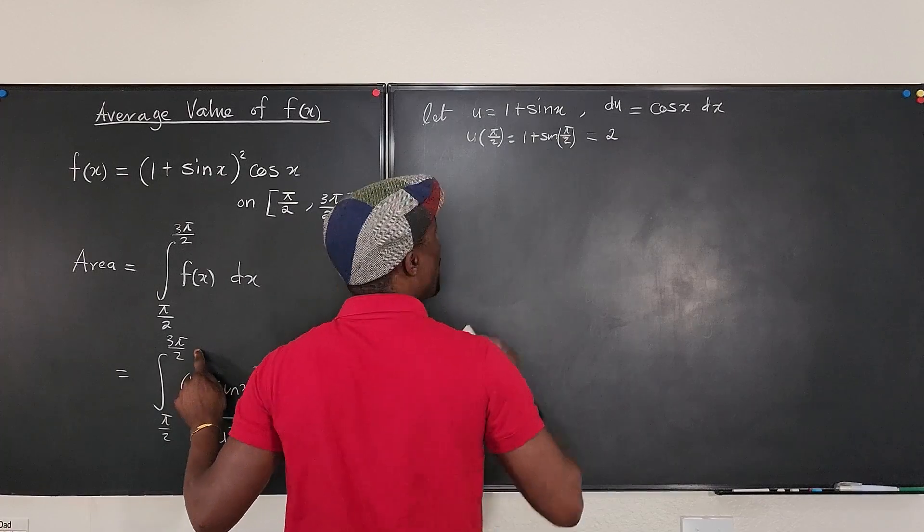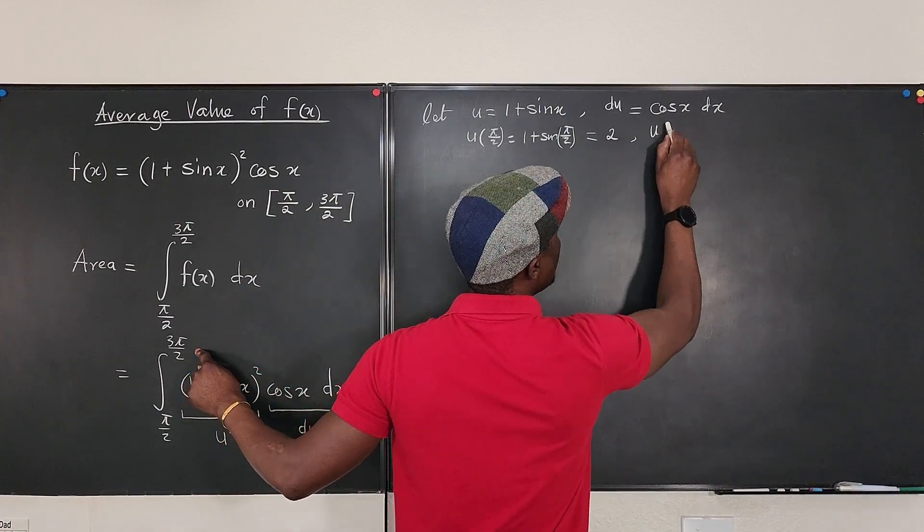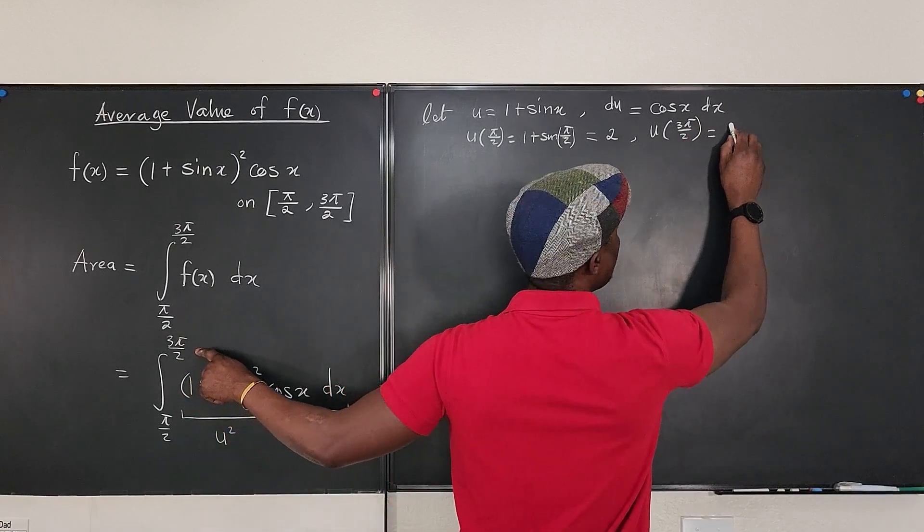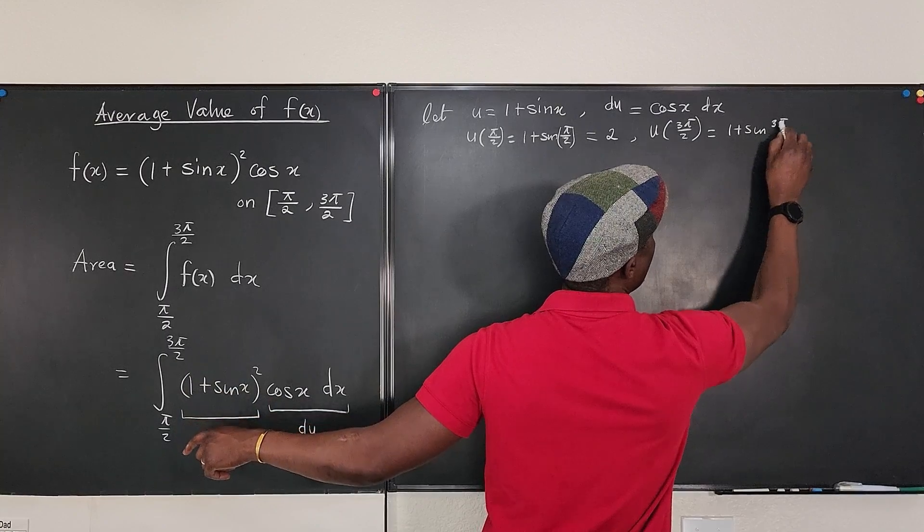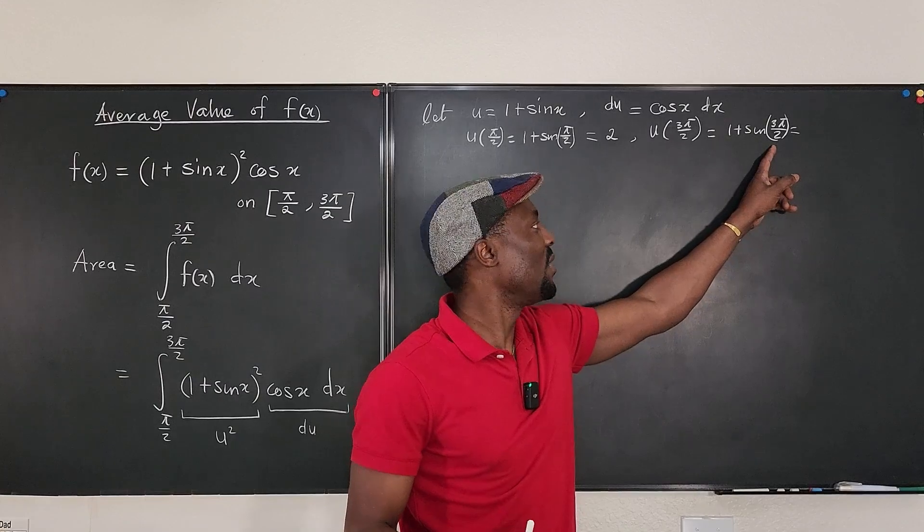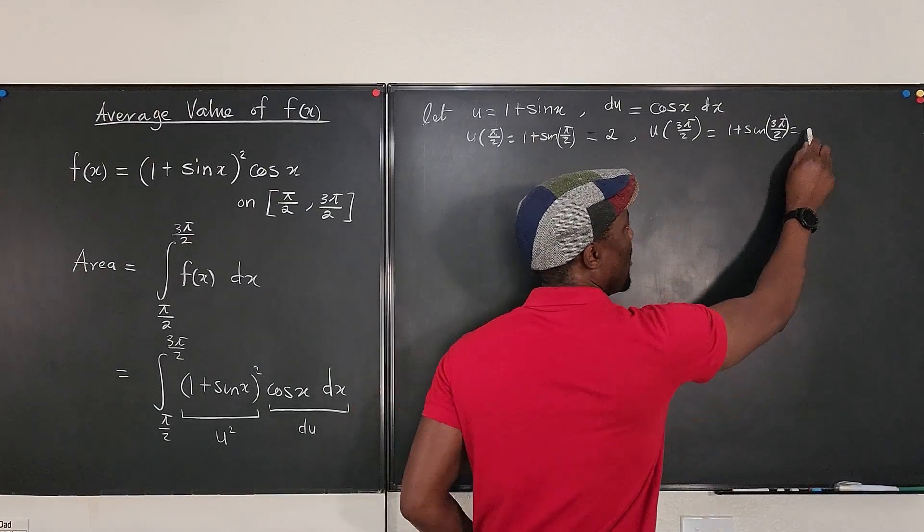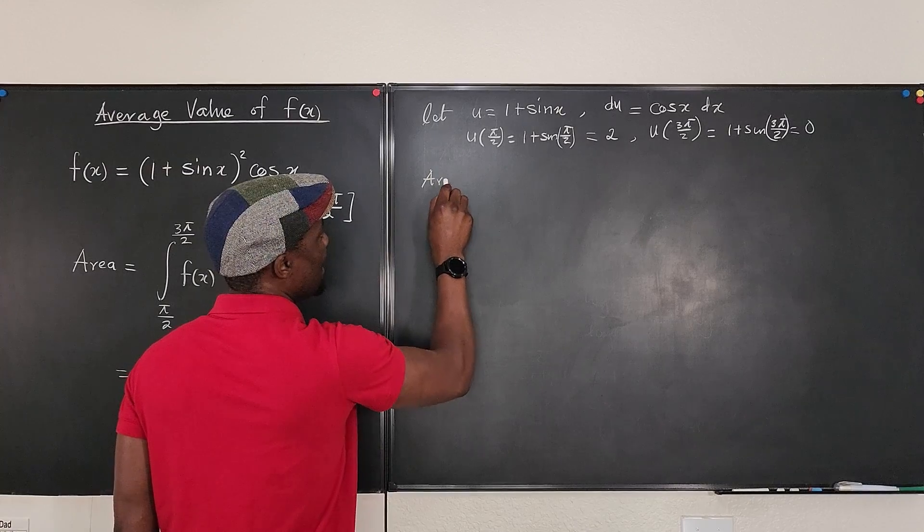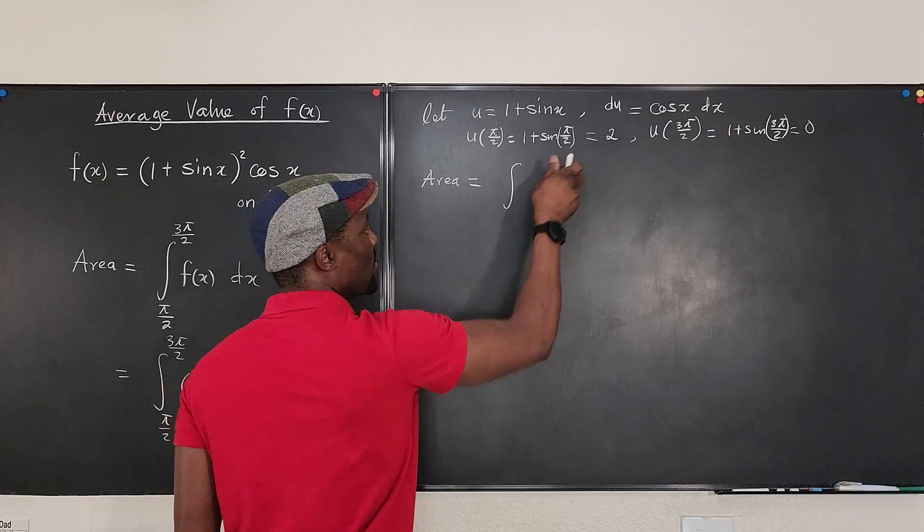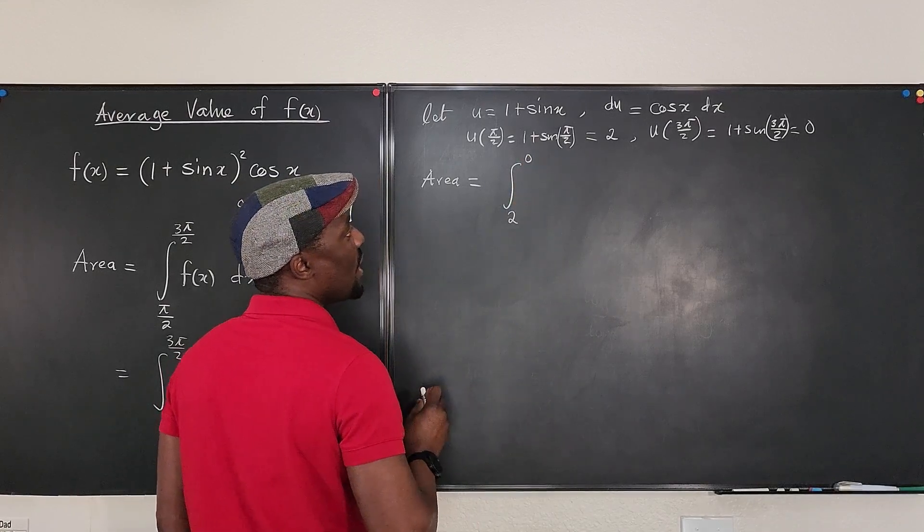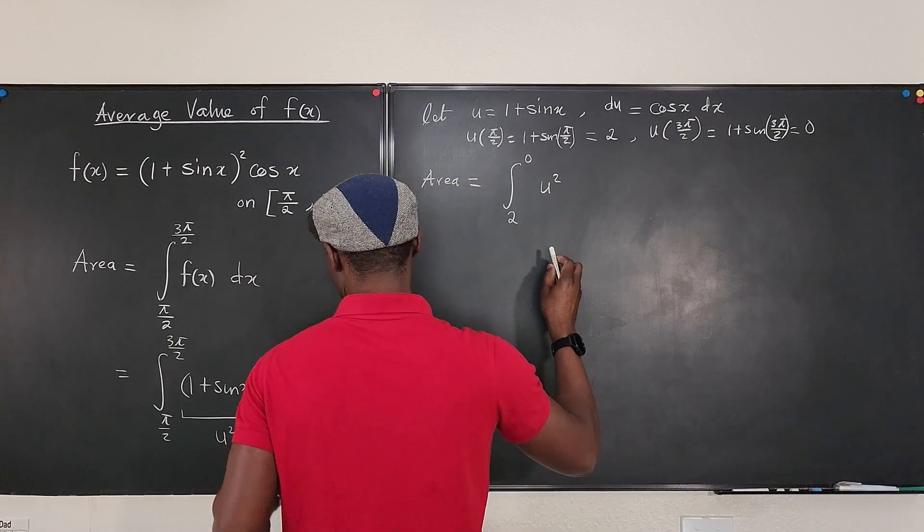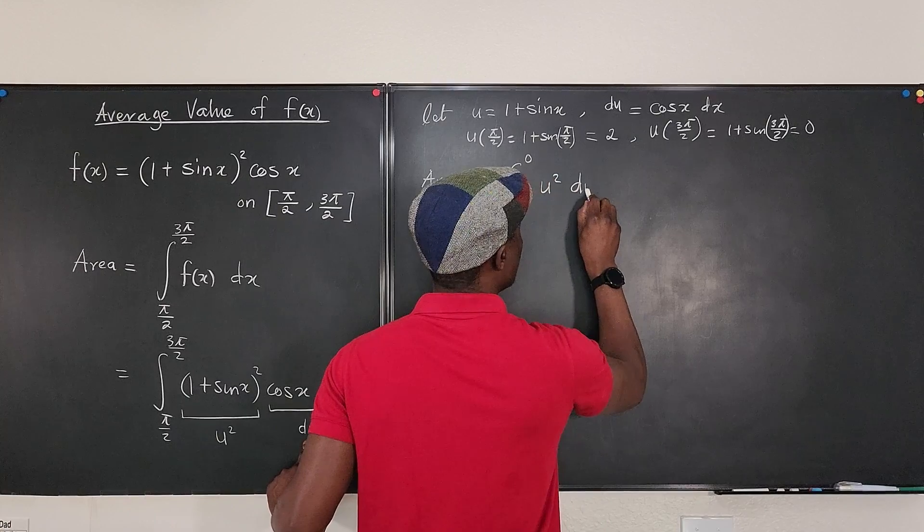Now, I go back and say, what is u when it is evaluated at 3 pi over 2? Well, that's going to be 1 plus sine 3 pi over 2. And I know sine 3 pi over 2 is negative 1. Negative 1 plus 1 gives me 0. So, I can clearly say that the area is equal to the integral from 2 to 0 of u squared du. That's it.